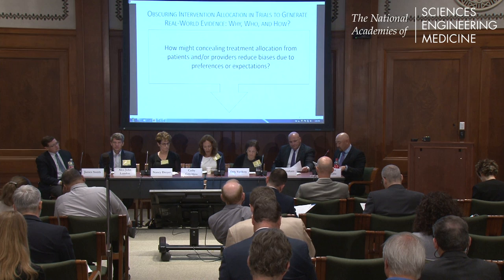How might concealing treatment allocation from patients or providers obscure meaningful differences between interventions — that real-world piece? And finally, how might the procedures necessary to conceal treatment allocation impact the acceptability of trial participation to patients and/or providers, the cost of the trial, and the risk-benefit ratio of trial participation? That's what we're going to see if we can apply and see how it works in other studies. To begin, we'll go to John Graham.